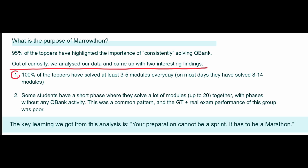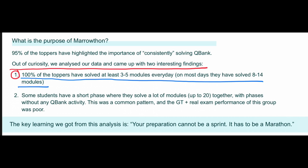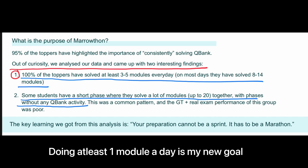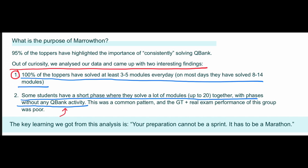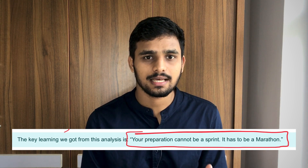They found that 100% of toppers solved at least three to five modules every day; on most days they solved eight to fourteen modules. Some students had short phases where they solved up to twenty modules, followed by phases with no Q bank activity at all. That was a common pattern, and the grand test plus real exam performance of that group was poor. So daily, slow-paced, consistent efforts are far better than occasional explosive study phases.